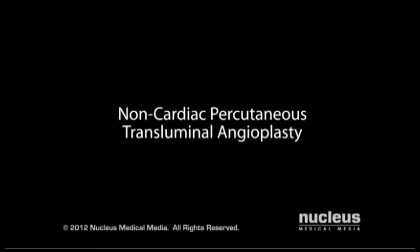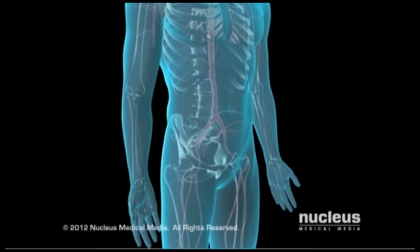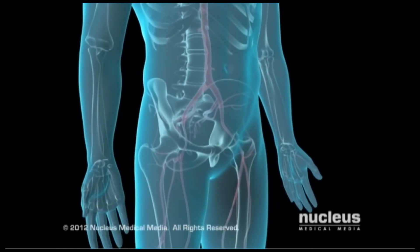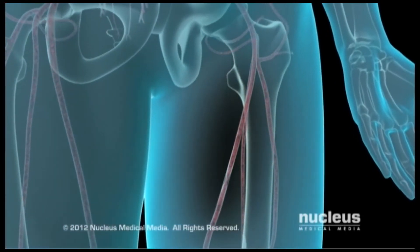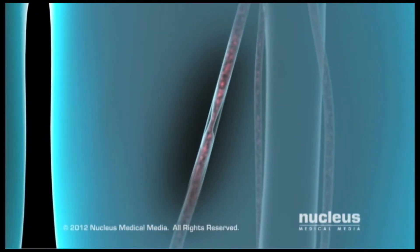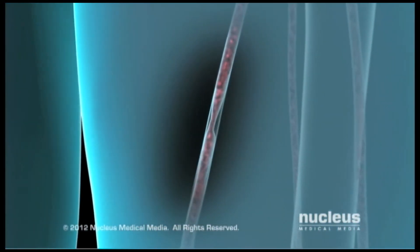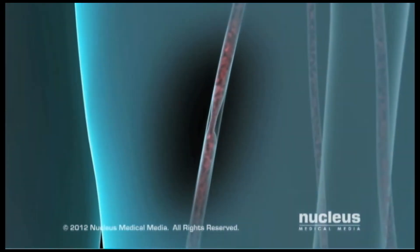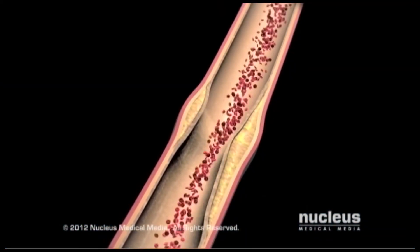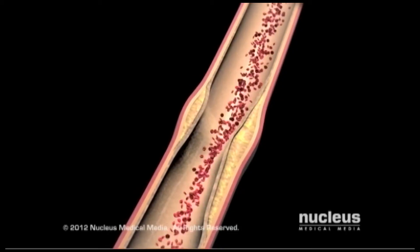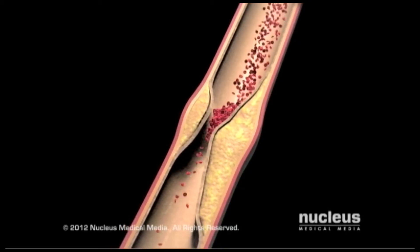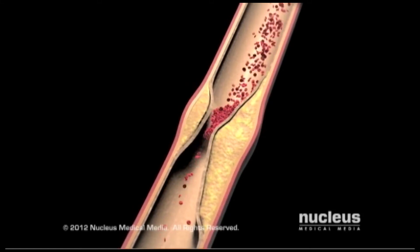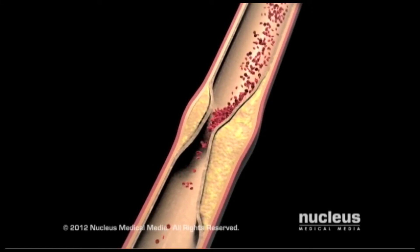A surgeon will perform a Non-Cardiac Percutaneous Transluminal Angioplasty, or NCPTA, to restore blood flow in an artery blocked by atherosclerotic plaque. Fatty deposits, called atherosclerotic plaques, can build up inside your arteries, narrowing the passageway and interfering with blood flow. This arterial blockage is called stenosis.